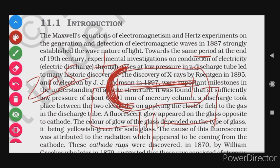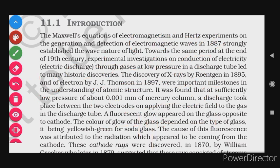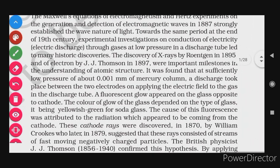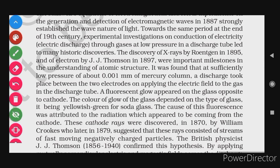These are called cathode rays. The discovery of cathode rays, the discovery of X-rays by Röntgen in 1895, and the discovery of the electron by J.J. Thomson in 1897 were important milestones in the understanding of atomic structure.